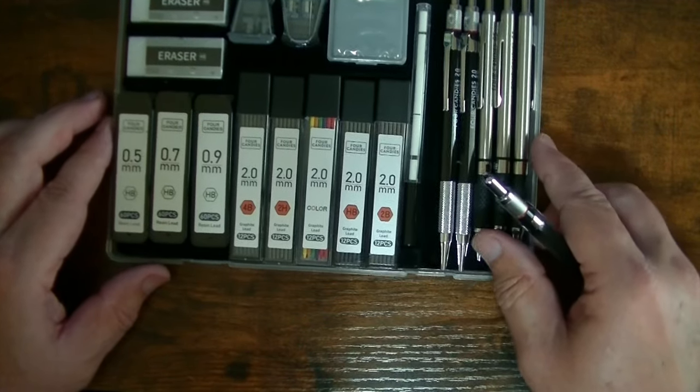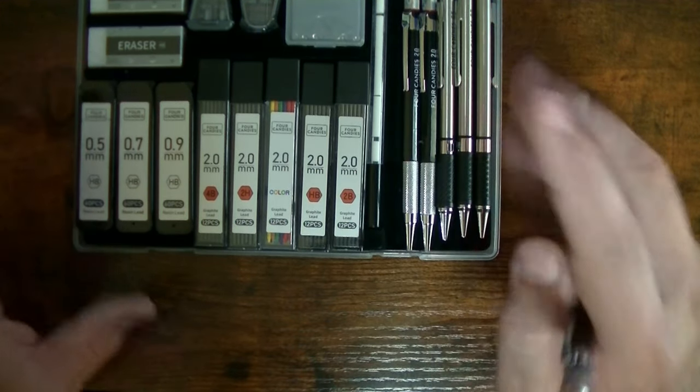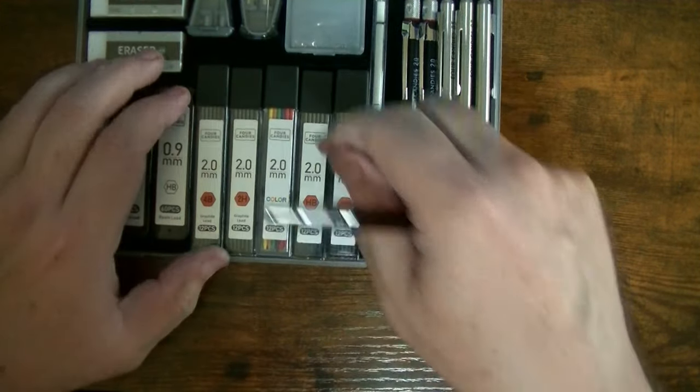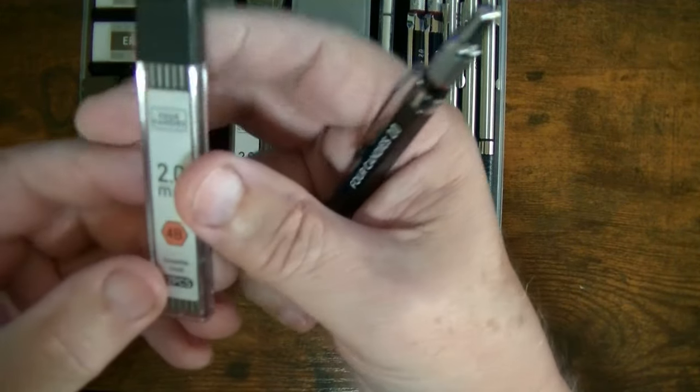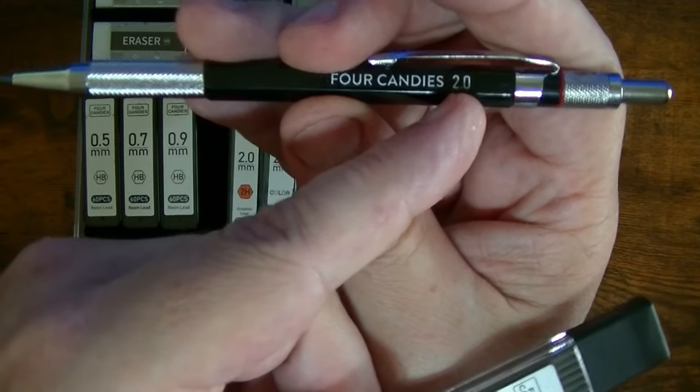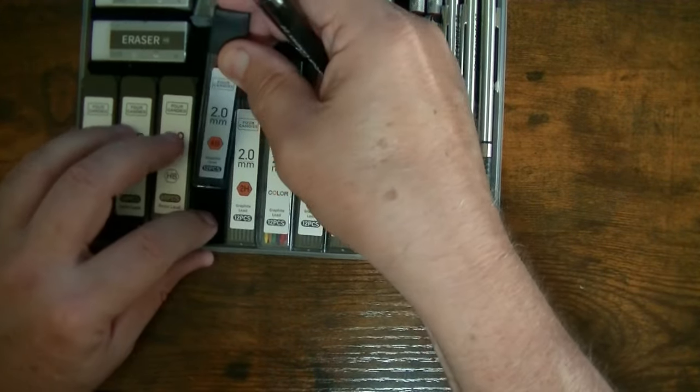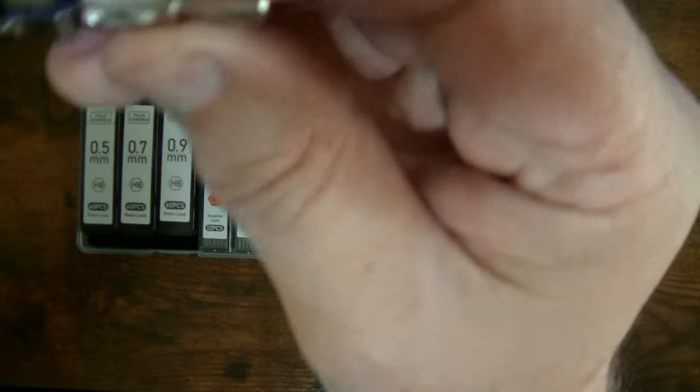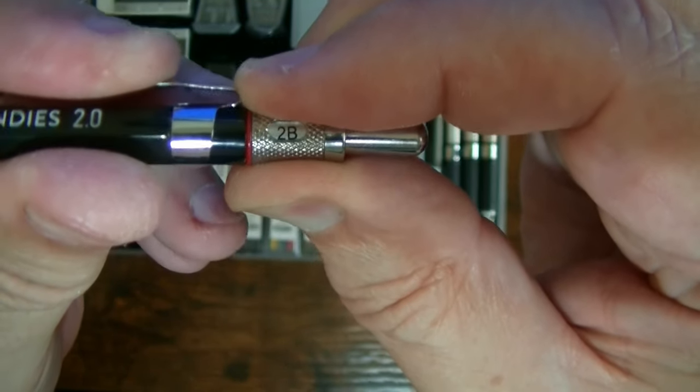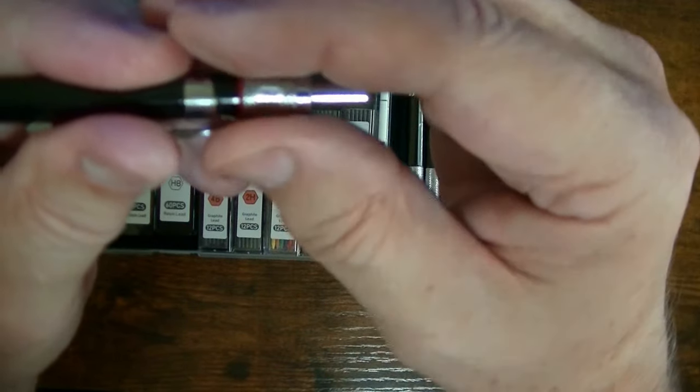And if you see over here on the 2.0s, you have all these 2.0s, which I think is great. Look what you have. You have a 4B. There's 12 pieces in here of 4B 2mm that goes into this 2.0 pencil. But notice it's 4B and this pencil does not even have a setting for 4B. You can see you have 2B, 4H, and you have 2H.